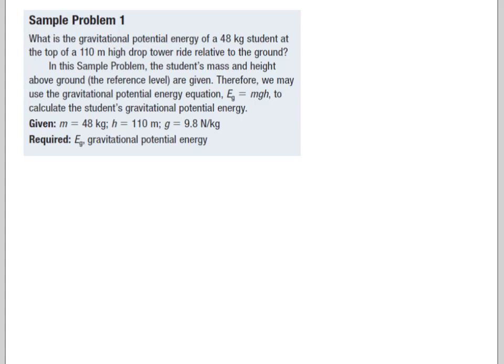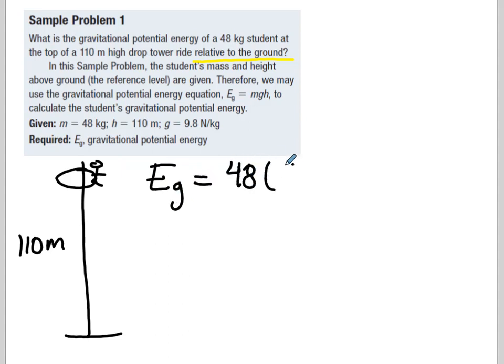So let's try one. What is the gravitational potential energy of a 48 kilogram student at the top of a 110 meter high drop tower relative to the ground? Now this line right here is telling you where your reference is. It's the ground, and that's really important. So if we have some sort of drop tower, 110 meters would be terrifying, and there is someone sitting here, ready to be dropped. So their potential energy at the top of this, their mass is 48 kilograms, gravity is 9.8, and the distance that they can be dropped is 110 meters.